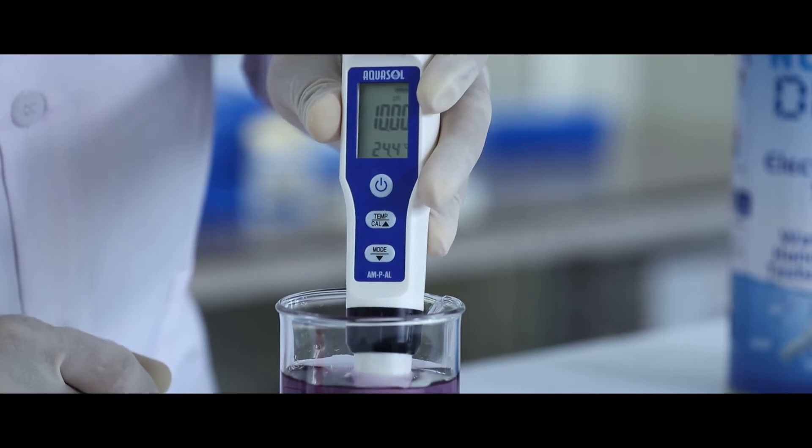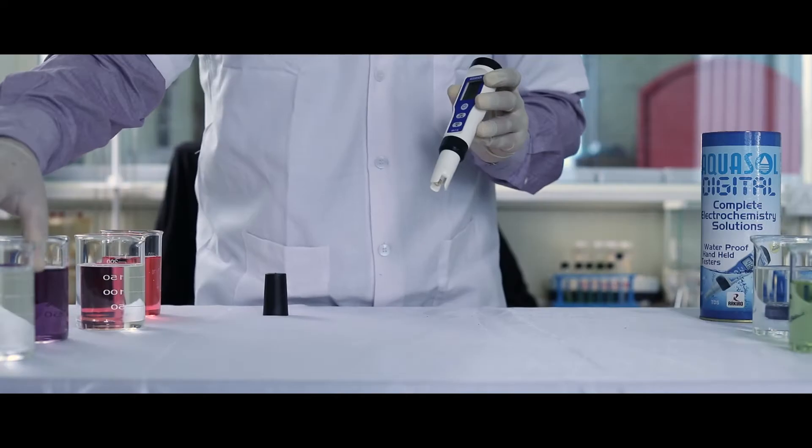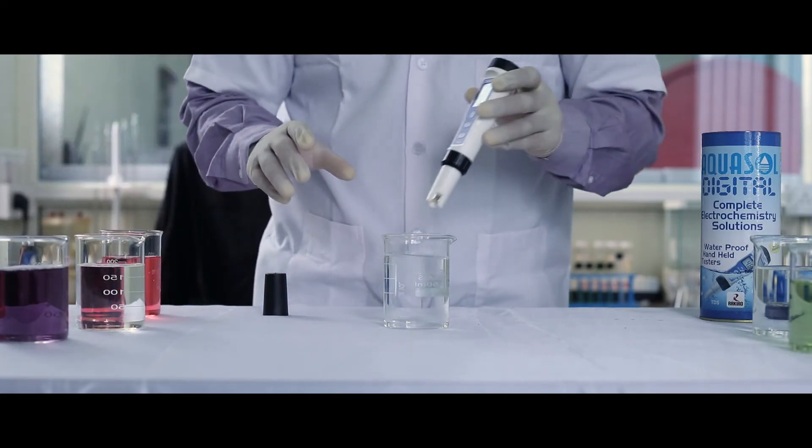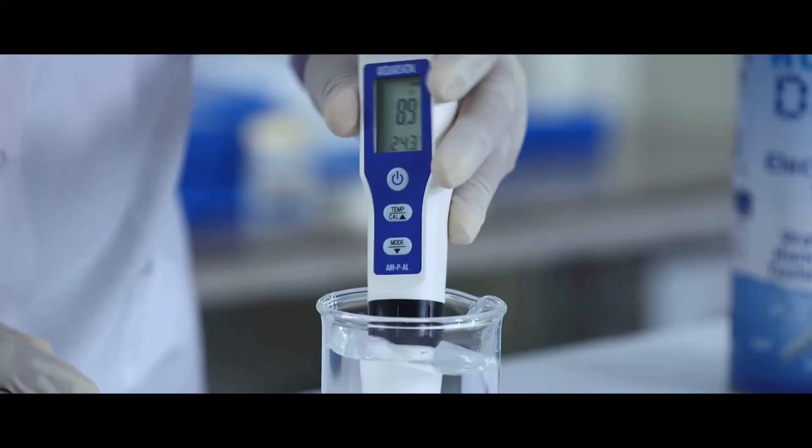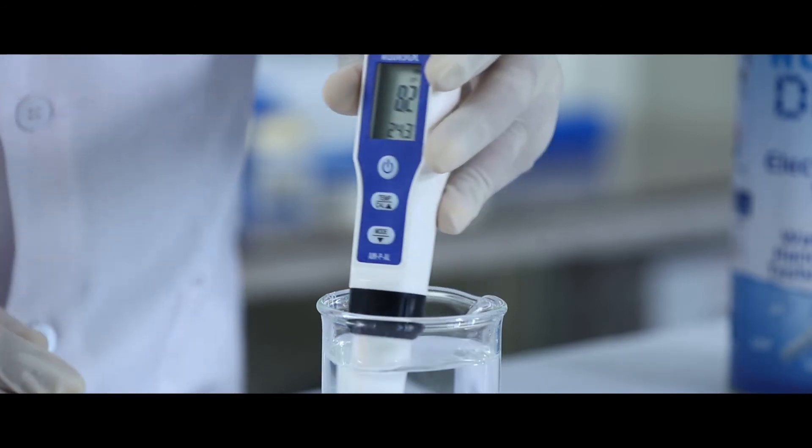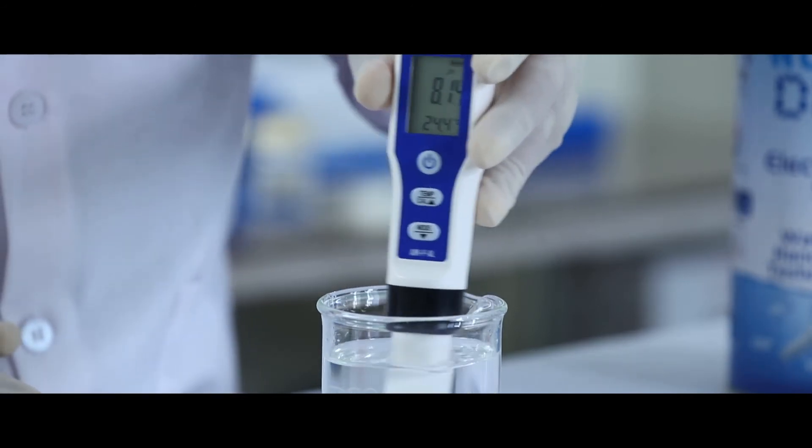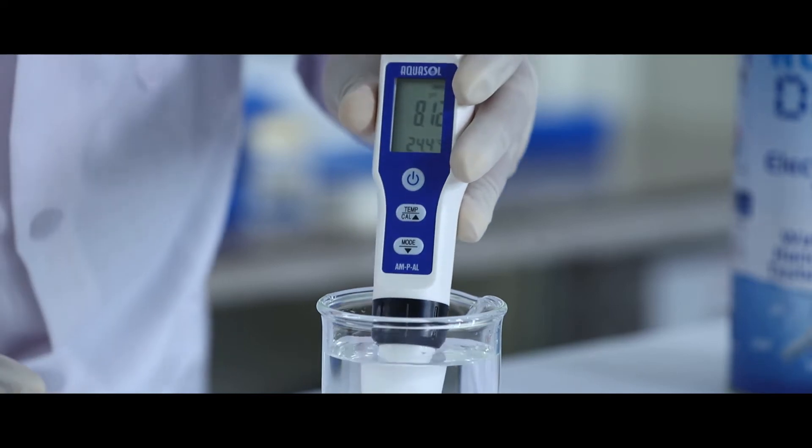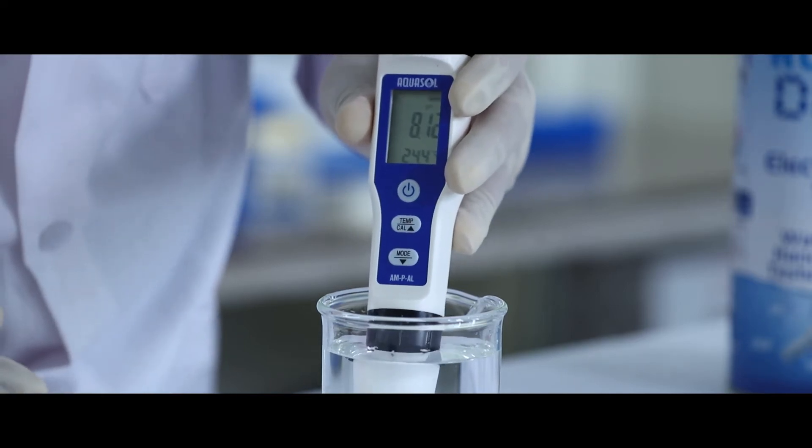Once all the calibration is done, the meter is ready to test samples for pH. Dip the electrode in the sample. Stir gently for stable reading. Note the pH value of the sample.